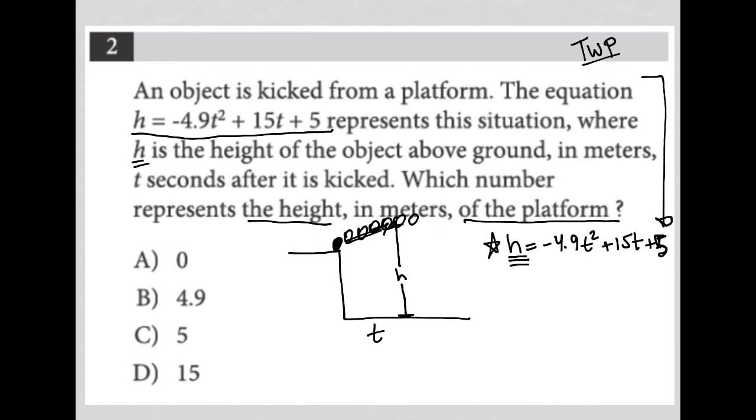the height in meters of the platform, in essence, what that is saying is where is the ball when T equals zero. Before you kick the ball, before the clock starts, the ball is on the platform.